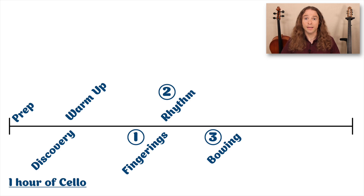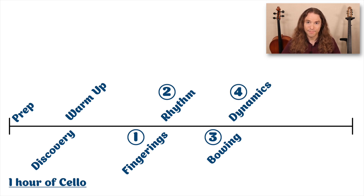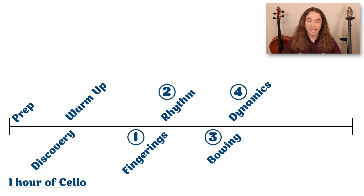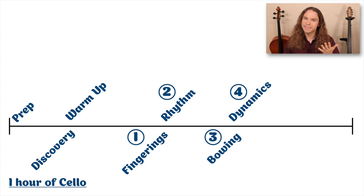Once you have understood the bowing and developed confidence, then we move on to dynamics — crescendos, diminuendos, things of this nature. We start to add these musical elements into the piece, for we have already learned the fingering, rhythm, and bowing. The dynamics will now start bringing this piece to life. So after fingerings, rhythm, bowing, and dynamics, what is stage five?